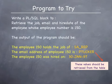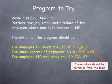Here is another program for you to try. Pause the video and attempt this program where you must retrieve the job, email, and hire date of the employee whose employee number is 150. The output of the program is to display those values retrieved through strings as shown on the slide. The solution to this program is also at the end of the video segment.